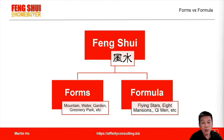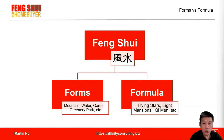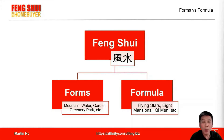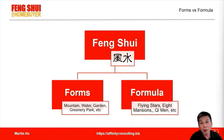Some of the commonly used formulas are Flying Star, Eight Mansions, and the most sophisticated ones are the Purple White Script, the Dragon Gate formation, and many others. But these formulas will not work if the forms or the environment do not provide the right conditions.